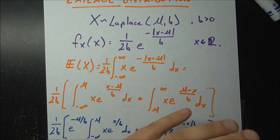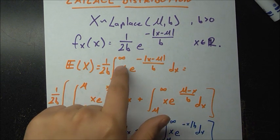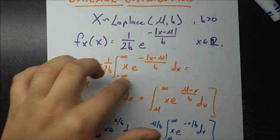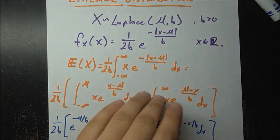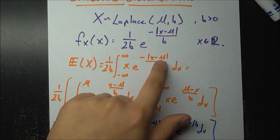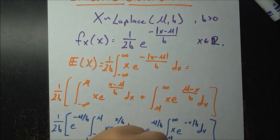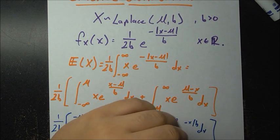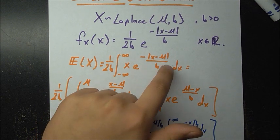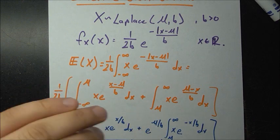This absolute value is kind of bothersome, so we need to observe the behavior of this expression. As we traverse from minus infinity to infinity, when we hit mu something changes. If x is less than mu, then x minus mu is negative, so the absolute value needs to flip it. In the other case, if x is above mu, we get something positive, and x minus mu is already the correct value, so the absolute values are not needed.